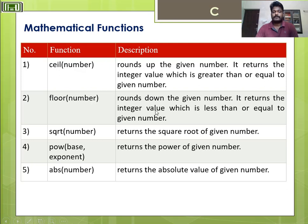Then in the case of floor, it returns the integer value which is less than or equal to the given number. Next is sqrt — this function returns the square root of the given number. The fourth mathematical function is pow(base, exponent) — the power function returns the power of a given number. You need to give the base and exponent; for example, pow(2,3) means 2 cubed, which equals 8.